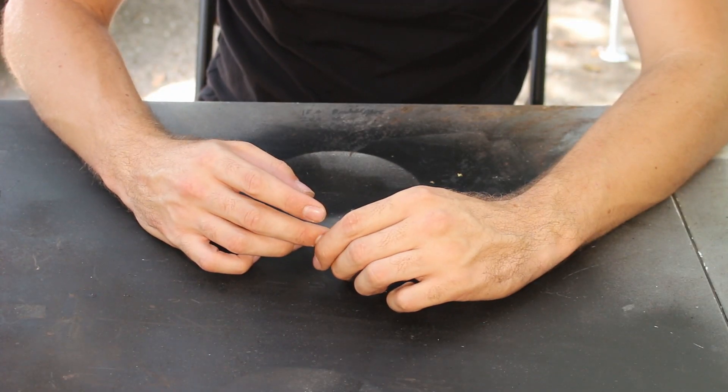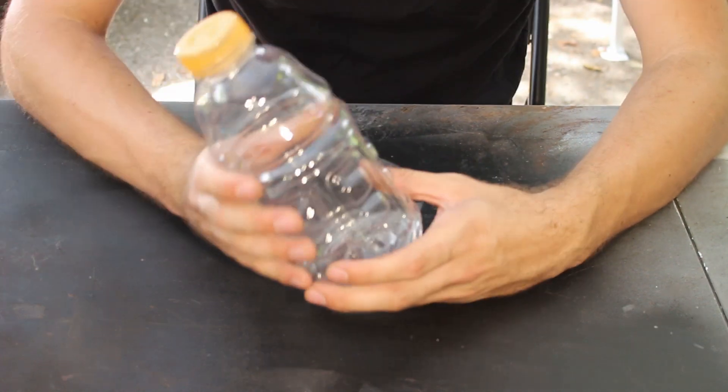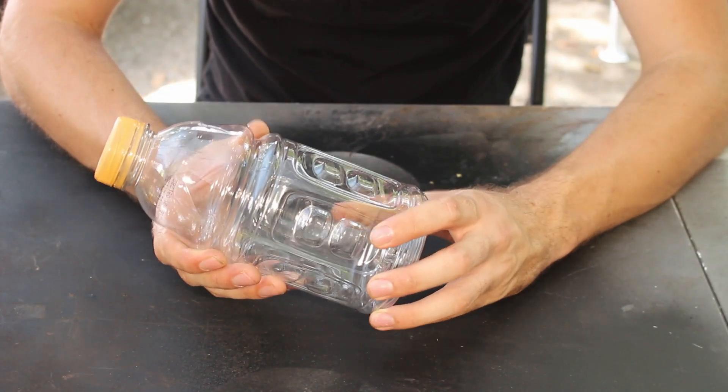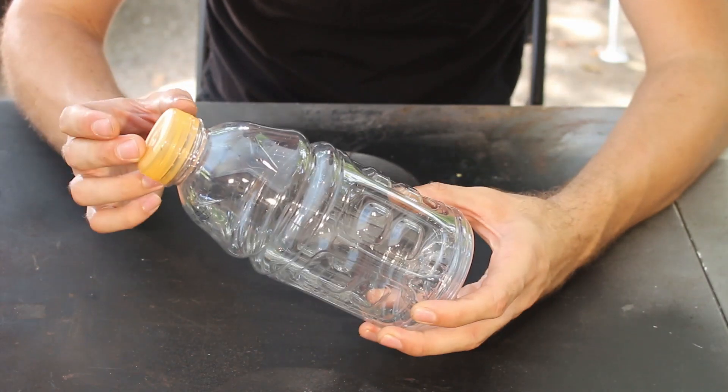This is what you need to make your own brake bleeder. You need a bottle. You can use any soda pop bottle. I like Gatorade bottles because they're sturdier and have a large cap.